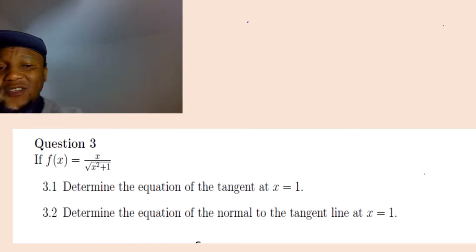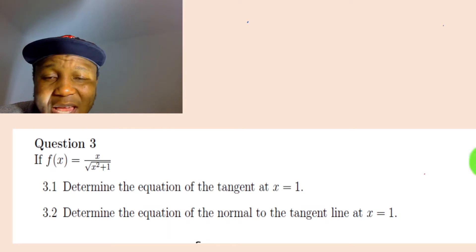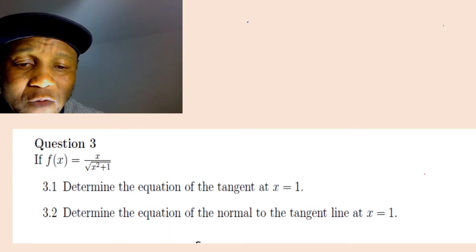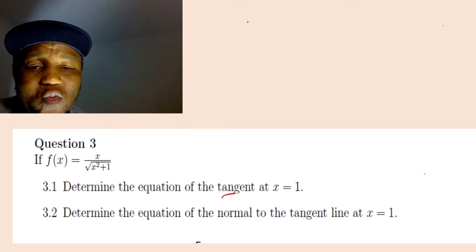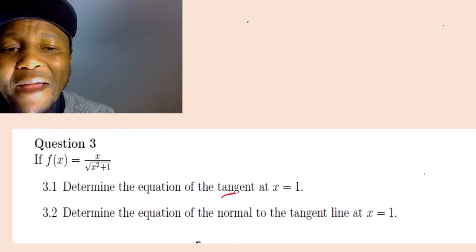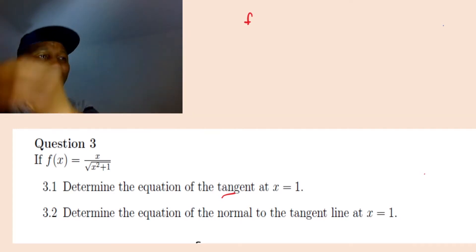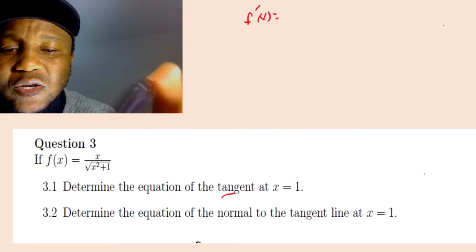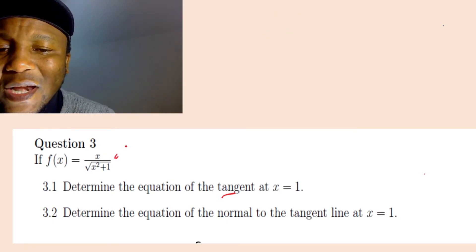Let's solve this question — it's very easy. We need to find the tangent at x equal to one. What I'm going to do is differentiate. Let me find f prime. So I'm going to find f prime, meaning the derivative of the function. Look, this is a quotient, so let me call the numerator f and the denominator g.